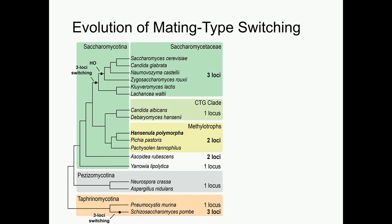We know very little about where this system came from or how it originated. We know that Saccharomyces cerevisiae and its closest relatives contain this three-locus switching mechanism, but what existed before that, we had very little idea.